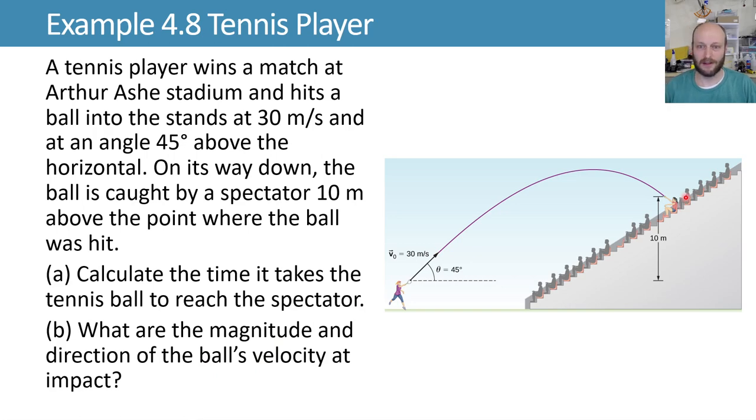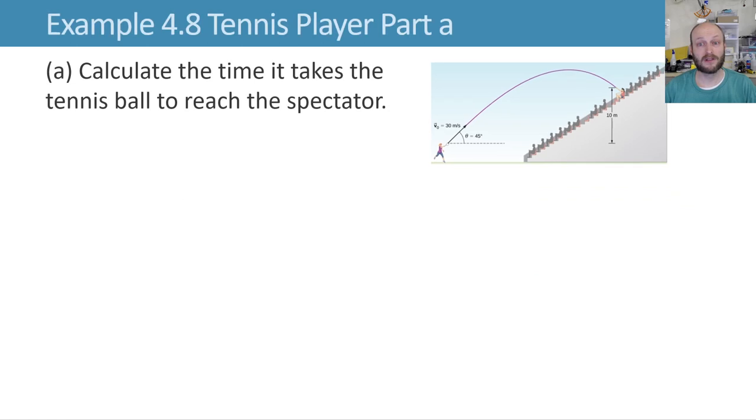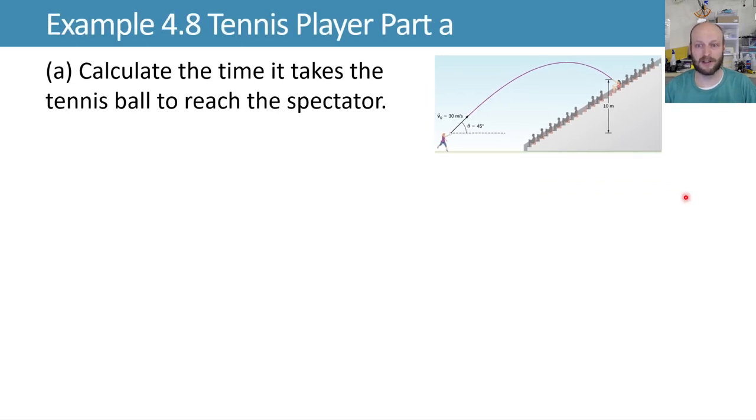We'll use projectile motion to solve for this. First, how much time does it take to reach the spectator? We can take our initial velocity and split it up into x and y components using trigonometry. We know the initial launch angle, so our initial velocity in the y direction is equal to our initial velocity times sine of that angle theta, which is 30 meters per second times sine of 45 degrees, or 21.2 meters per second.